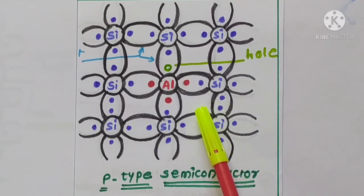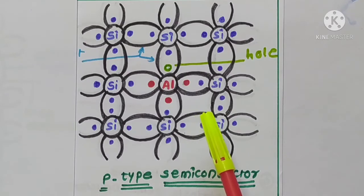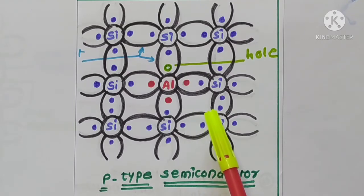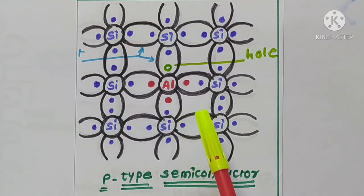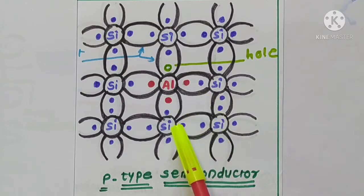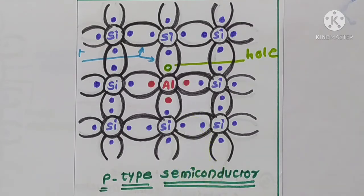With increase of temperature, some electron-hole pairs are generated. In P-type semiconductors, holes are majority charge carriers and free electrons are minority charge carriers.